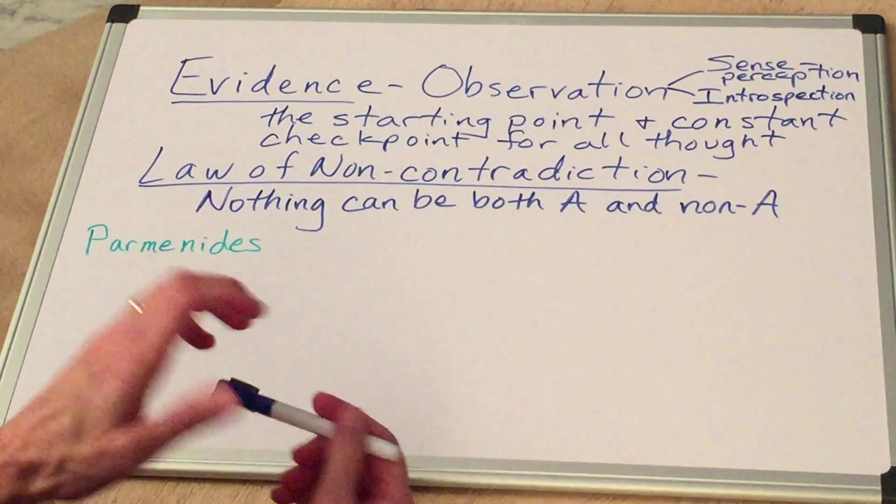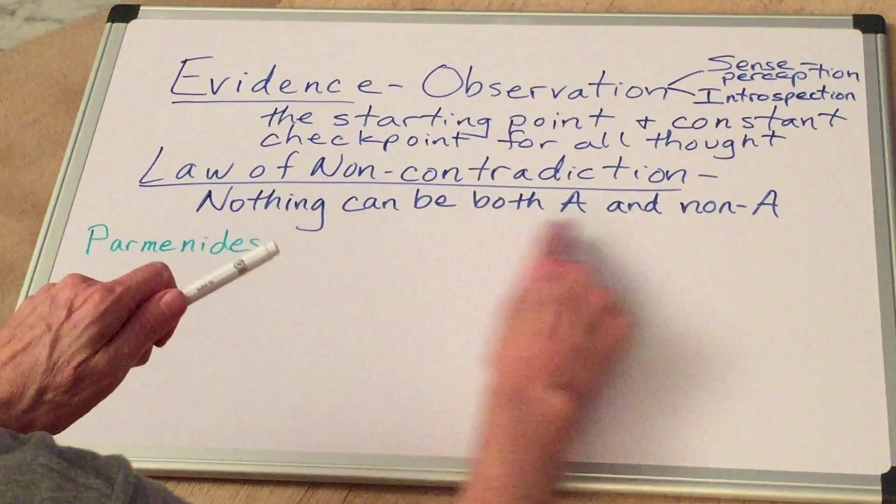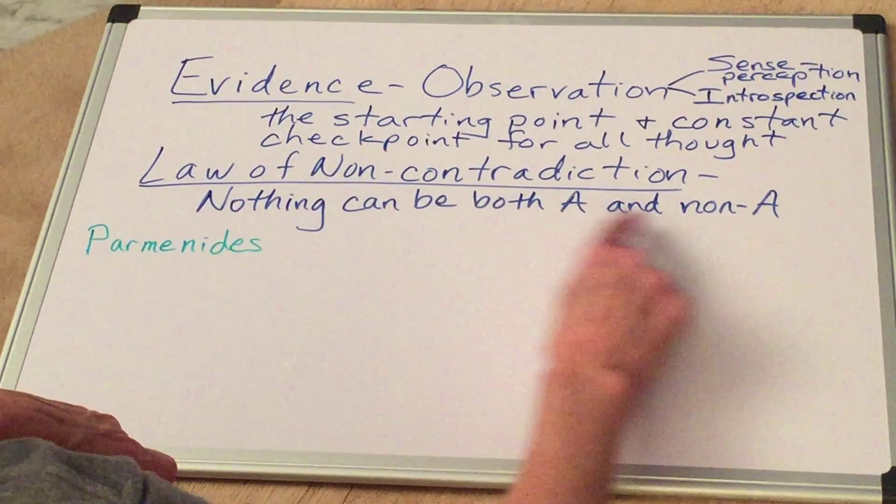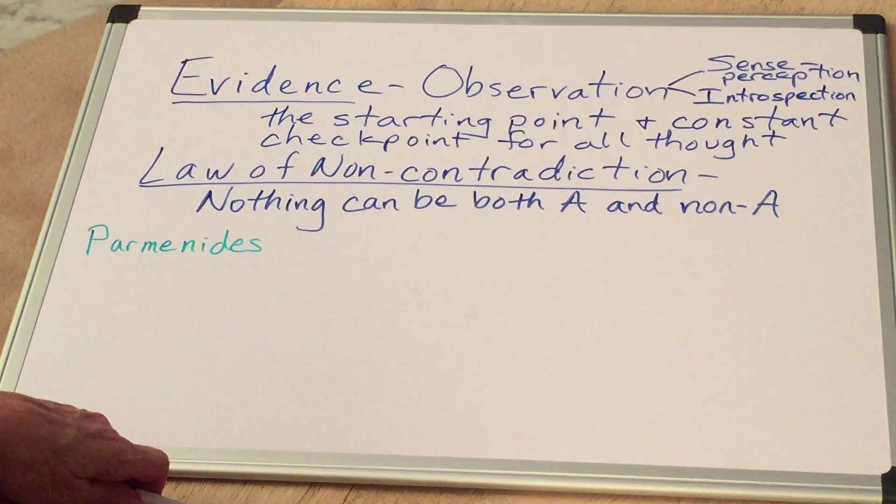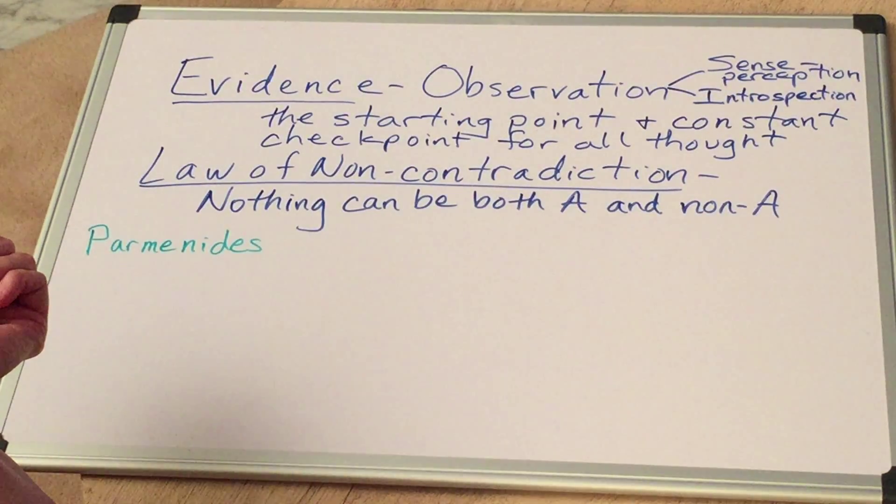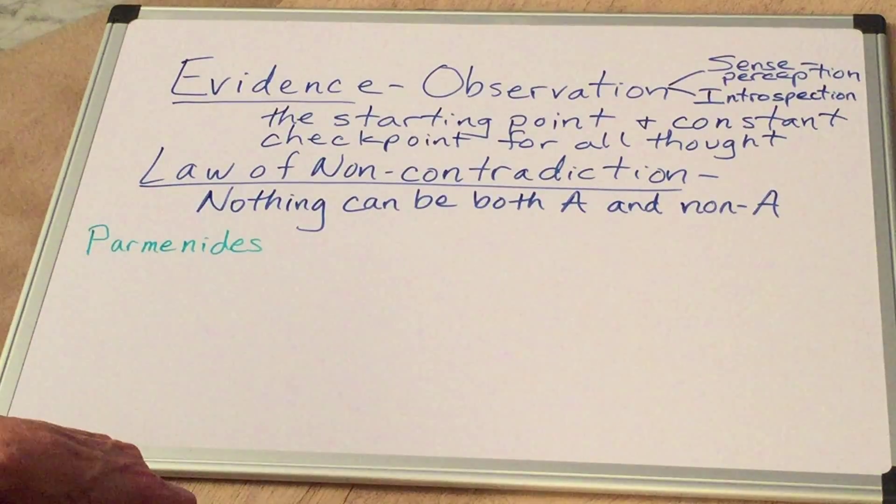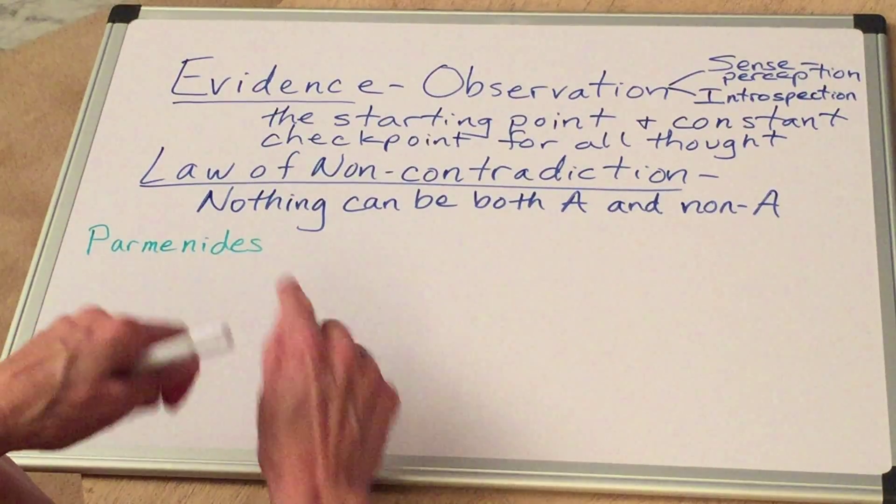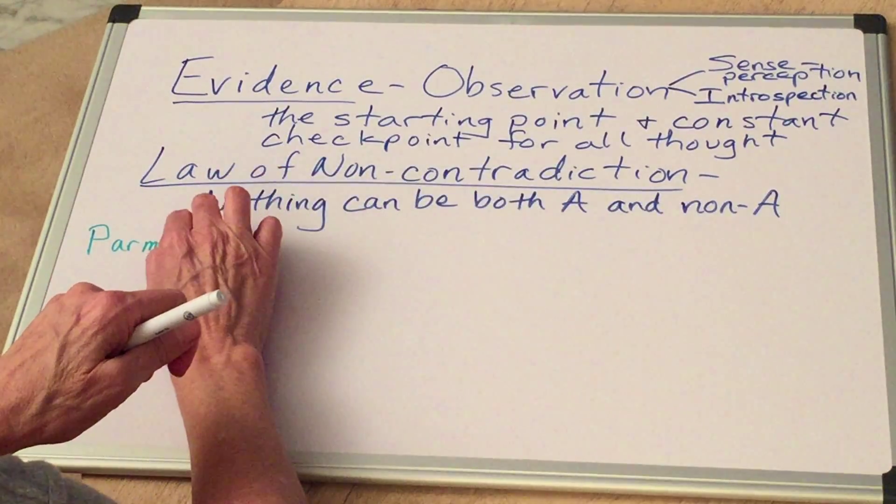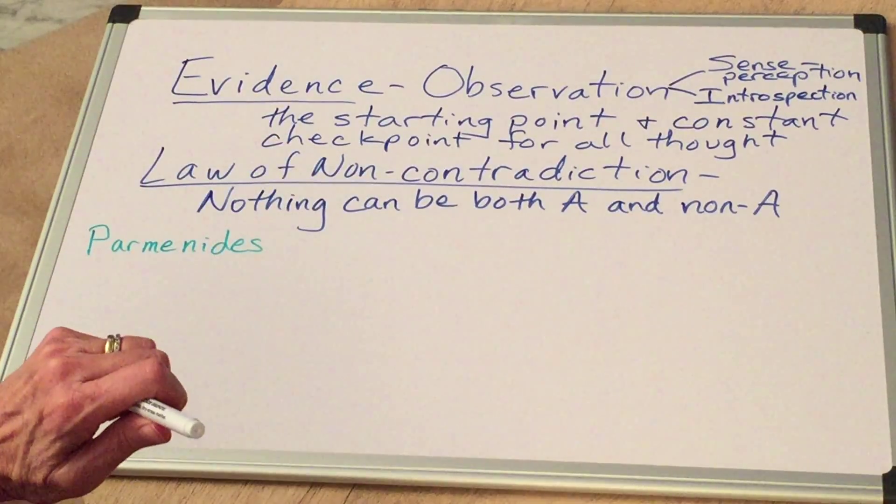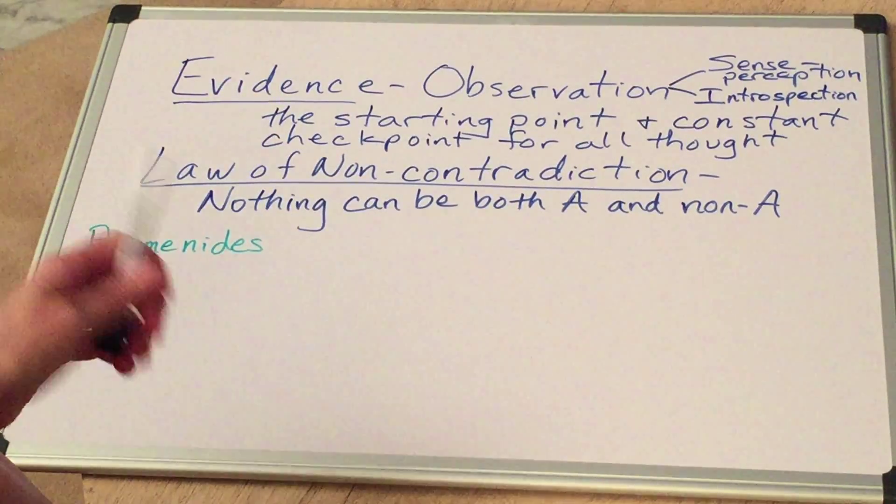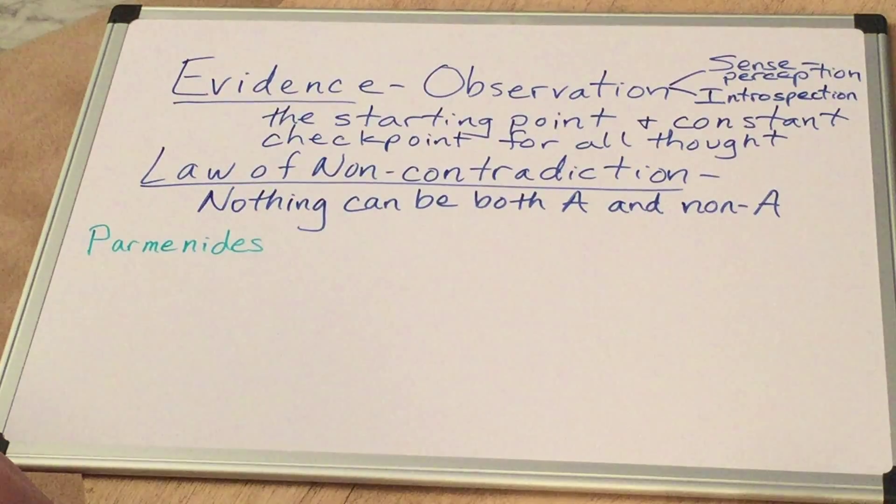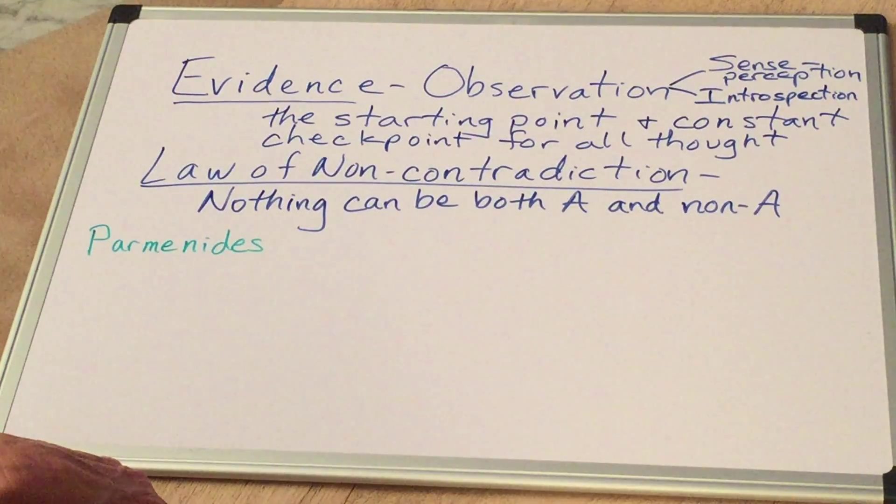So Parmenides thought, this is a law of all reality and all thinking. And therefore, there must be no such thing as change. That's what Parmenides said. So he chose the law of non-contradiction against the evidence. And he said there was no such thing as change, even though all the evidence of his observation said that things changed.